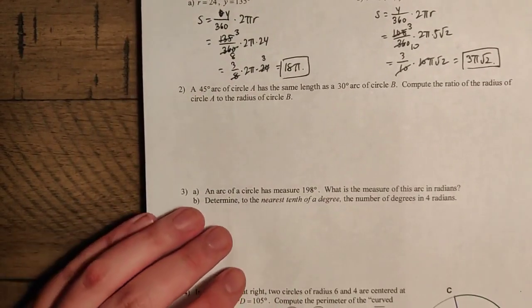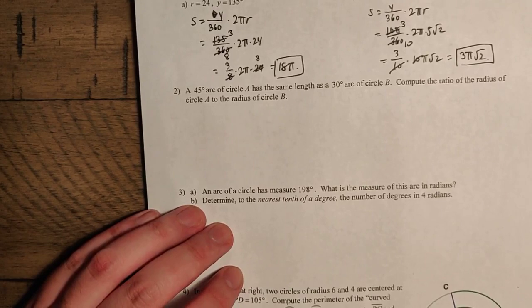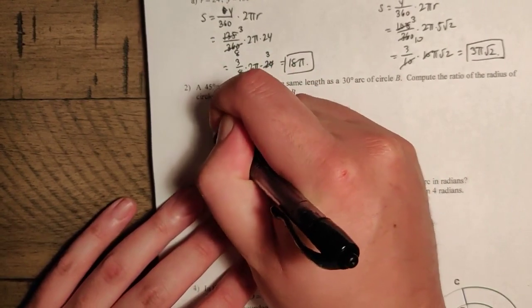Problem 2 says a 45 degree arc of circle A has the same length as a 30 degree arc of circle B. Compute the ratio of the radius of circle A to the radius of circle B. So we're going to try this one out. We'll sketch two circles here.